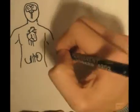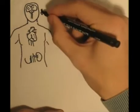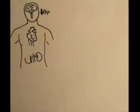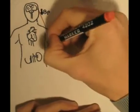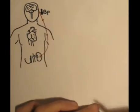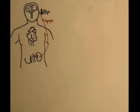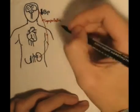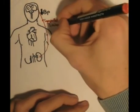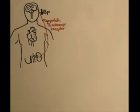Now the renin-angiotensin system begins with the brain sensing a drop in blood pressure. Then what it does is it sends signals through the sympathetic nervous system to beta-1 adrenergic receptors in the kidneys, which then secretes renin.